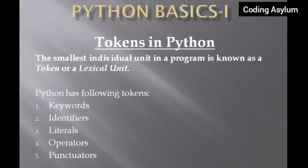So what are tokens in Python? The smallest individual unit in a program is known as a token, or a lexical unit. That is the theoretical definition of what a token is — we are not going to focus on definitions here, but on the actual meaning.